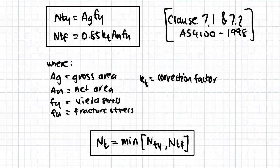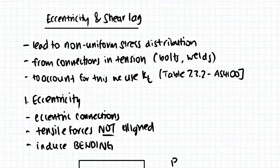And so now we're going to move on to eccentricity and shear lag, which are phenomena that lead to non-uniform stress distribution in steel members. Now they usually arise from connections.